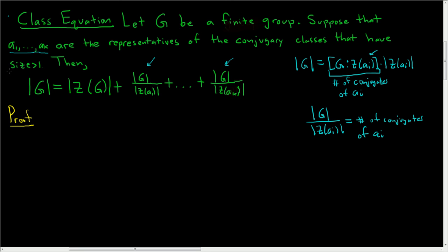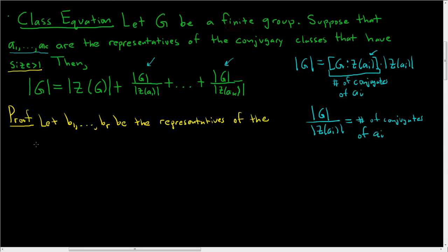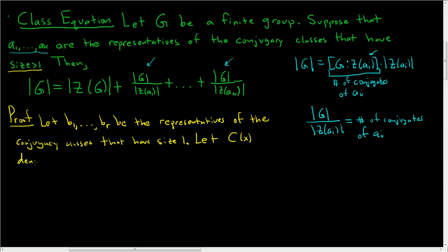We already have the conjugacy classes that have size greater than 1. Now let's write down the ones that are singletons — the ones that have size 1. Let B sub 1 through B sub R be the representatives of the conjugacy classes that have size 1. For notation, let C of X denote the conjugacy class of X.